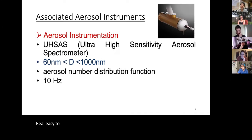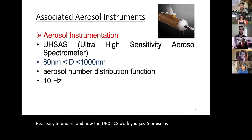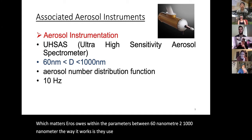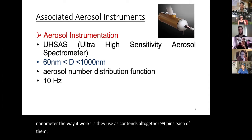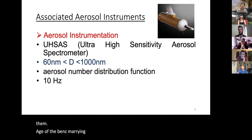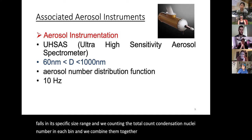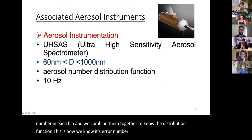The UHSAS — Ultra High Sensitivity Aerosol Spectrometer — measures aerosols with diameters between 60 nanometers and 1,000 nanometers. It contains 99 bins, each measuring a particular group of aerosols within a specific size range. By counting the total condensation nuclei number in each bin and combining them, we derive the aerosol number size distribution function. It operates at a 10-second per count frequency — 0.1 Hz. The UHSAS covers only a portion of the aerosols captured by the CPC.